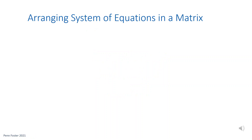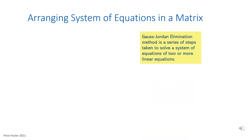The Gauss-Jordan elimination method is another way of solving a system of linear equations. In prior lessons in algebra, other methods have been introduced, such as substitution, elimination, and graphing.